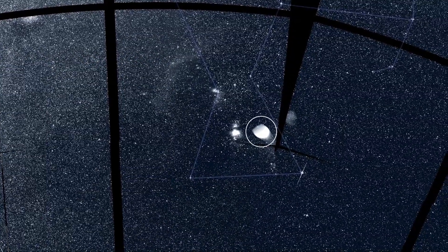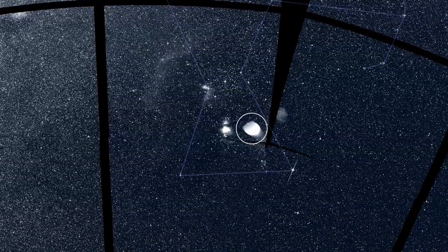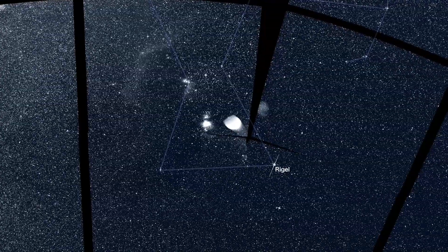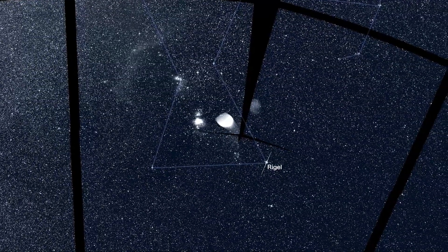This isn't a cosmic object at all. It's actually a reflection of Rigel, the bright star marking one of Orion's feet, and it's caused by light scattering off part of TESS's camera system.